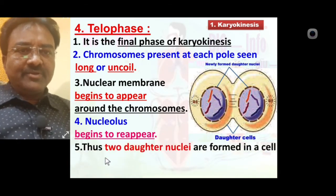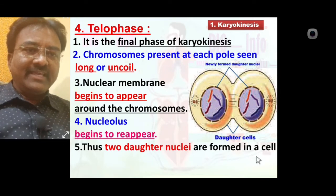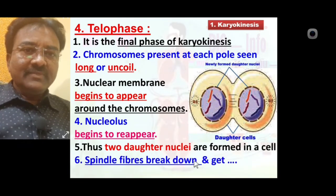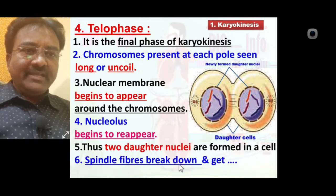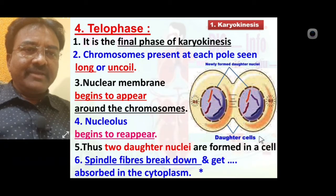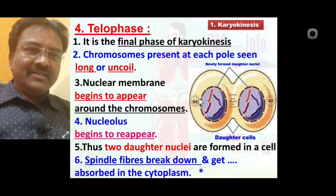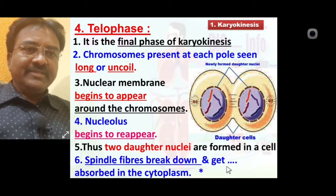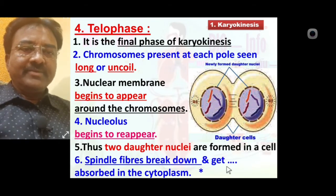Thus, two daughter nuclei are formed in the cell. Spindle fibers break down — they are completely broken down and absorbed into the cytoplasm. Due to this, each pole consists of one nucleus. Up to this we have discussed telophase as the fourth phase of karyokinesis.